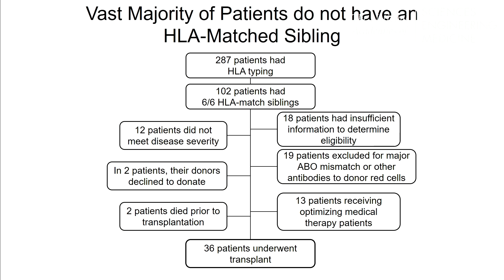The problem is that only about 15% of patients with sickle cell disease will have a sibling who is a complete tissue match. To transplant the first 36 patients, 287 underwent HLA typing and 102 were found to have an HLA match. But in the community, there is only about a 15% chance that a patient will have a sibling who is a match.